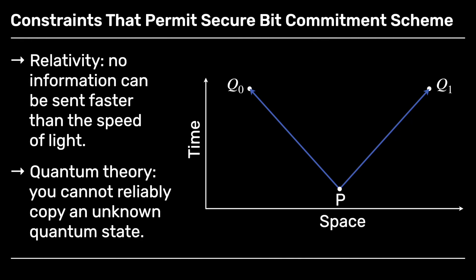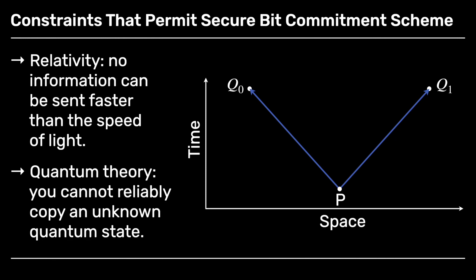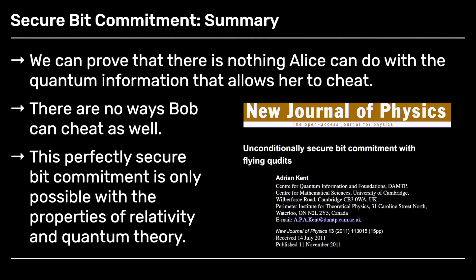Another way she might like to cheat is to take what Bob gives her and make two copies of it — send one to Q0 and another to Q1, and then decide which one to return. If she could do that, she could pretend to be committed without actually being committed until later, and then unveil whichever she likes. But the no-cloning theorem tells us she can't do that. And with a little more work, you can prove not only that she can't cheat in either of those two ways, but that there's nothing she can do with the quantum information that allows her to cheat on this protocol. She really has to choose a commitment in advance if she's going to be able to unveil that commitment later.